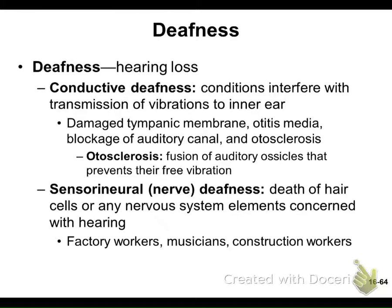For taste, the seventh or ninth cranial nerve picks up chemoreceptors triggered by sodium, glucose, hydrogen ions, and other ions. The pathway goes from the tongue through taste buds, partly to the amygdala to inform your emotions, and ultimately to the orbitofrontal cortex — a region of the frontal lobe.